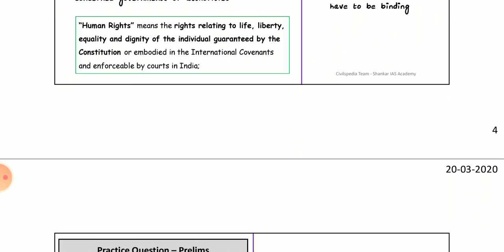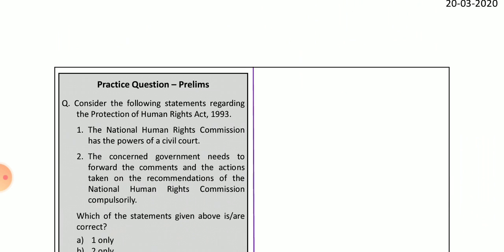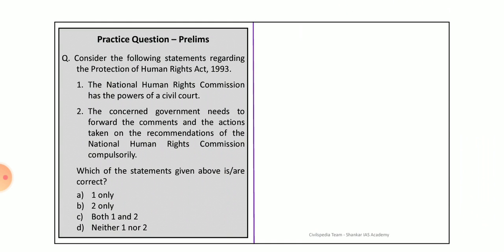Consider the following statements regarding the Protection of Human Rights Act 1993. Statement: The National Human Rights Commission has the power of a civil court. This is absolutely correct — the National Human Rights Commission does have the powers of a civil court.